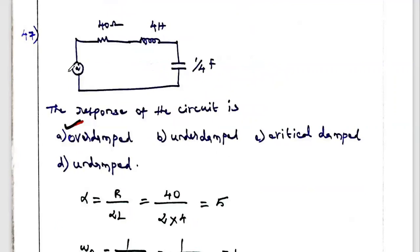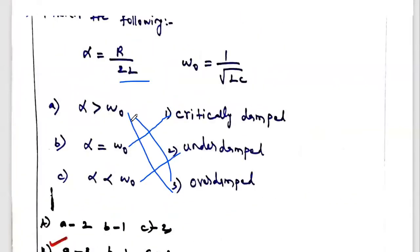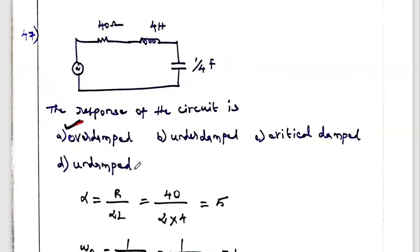The next question gives a series RLC circuit with an AC supply. The response of the circuit is either overdamped, underdamped, critically damped, or undamped. This question is related to the previous one — depending on the conditions, we have to find the alpha value and omega-naught value. If alpha satisfies the first condition it is overdamped, if equal then critically damped, if less than then underdamped.